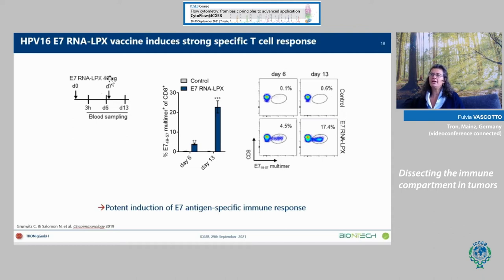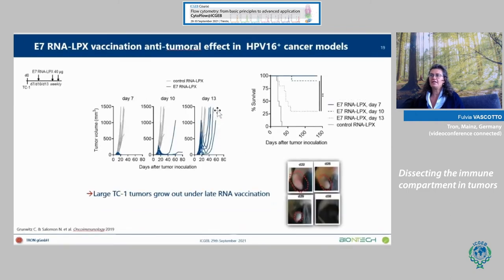Using a pretty high dose — though we can go even lower — based on the injection, already on day 6 after the first vaccination we can detect antigen-specific T cells, which are further amplified after the second vaccination. Two vaccinations carry a very high number of circulating T cells. This vaccination scheme was also extended to tumor-bearing mice, where we implant TC1 tumors subcutaneously.